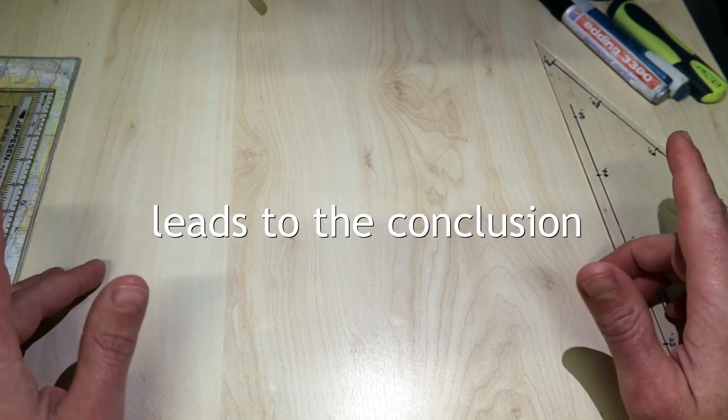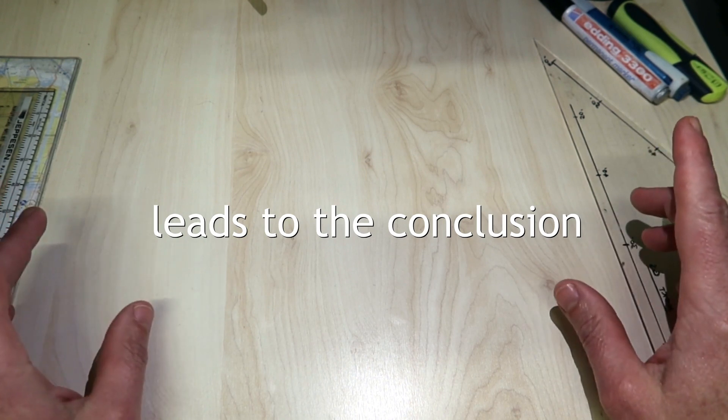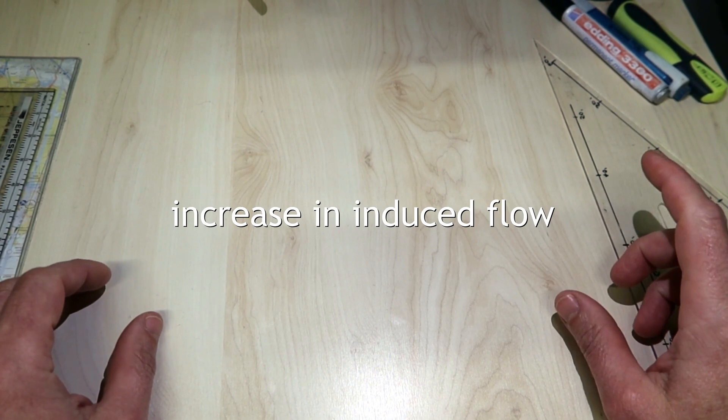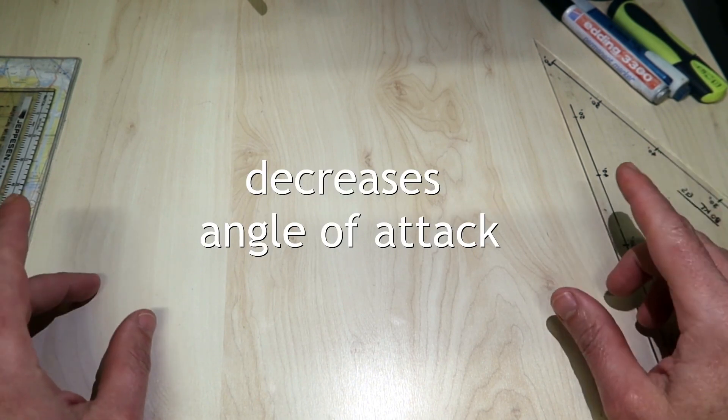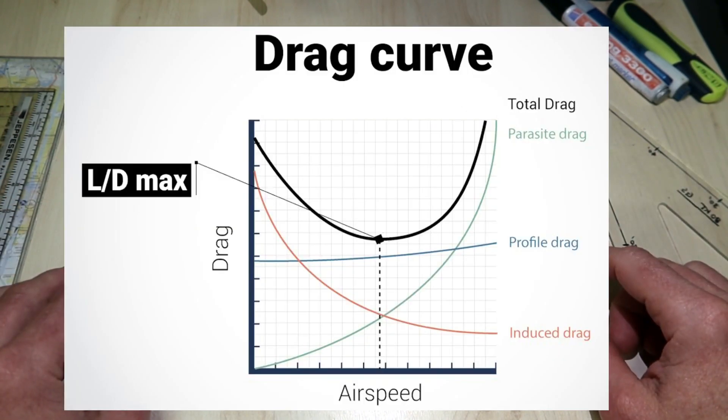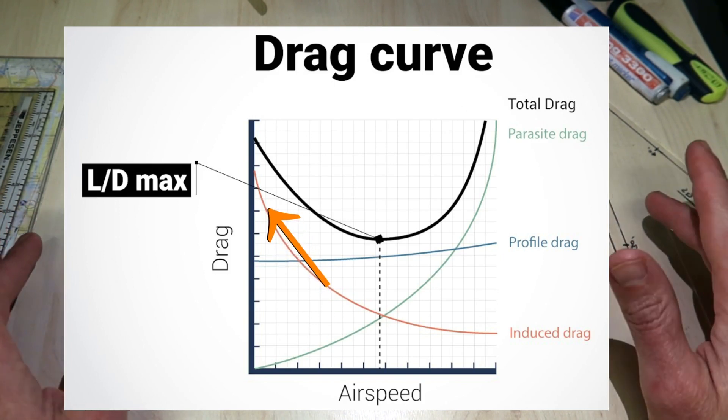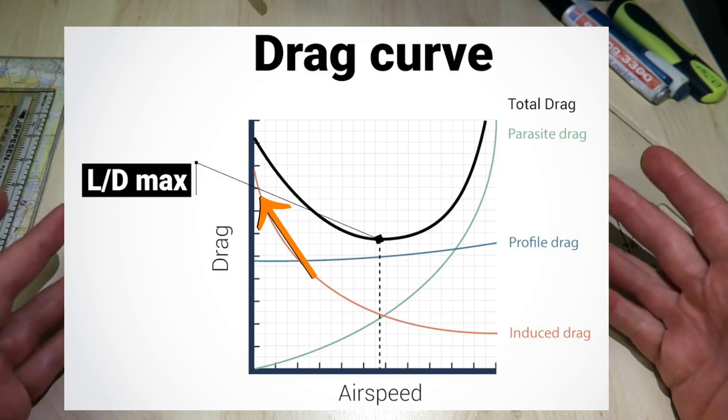The interaction of these elements leads to the conclusion that for a constant rotor RPM, an increase in induced flow decreases angle of attack. Induced drag is highest at low speeds where the induced flow is greatest.